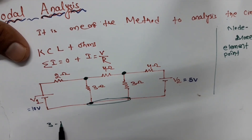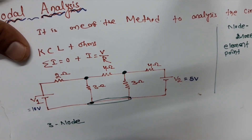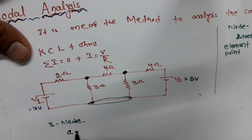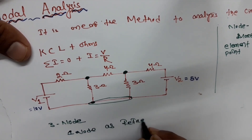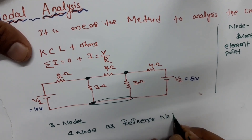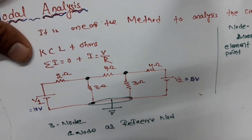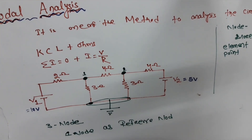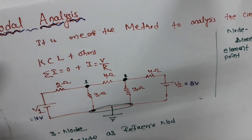There are 3 nodes here. In nodal analysis, we take one node as a reference node. Let's take this node as the reference node, marked with a ground symbol. This is node 1 and this is node 2.